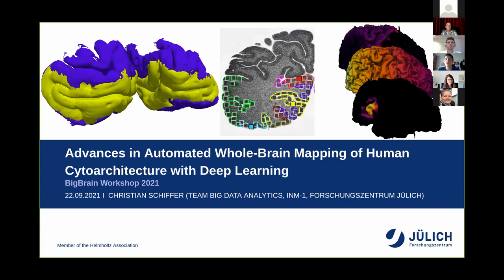Hi everyone. My name is Christian Schiffer. I'm a PhD student in the Institute of Neuroscience and Medicine at Research Center Jülich in the big data analytics group led by Timo Dickscheid. I will talk about some recent advances we made in automated whole brain mapping of human cytoarchitecture with deep learning. This will be a very high level overview of several methods we developed in the last years. These methods are not necessarily specific to the BigBrain, but especially for the BigBrain they really show their full potential.